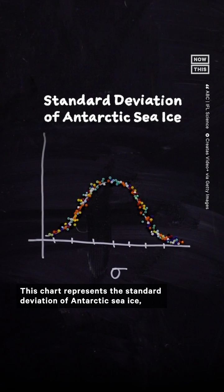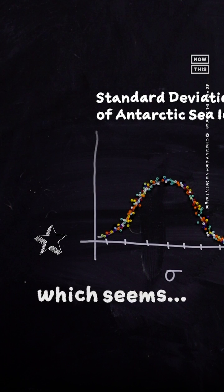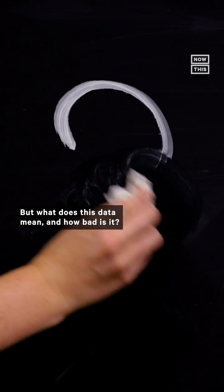This chart represents the standard deviation of Antarctic sea ice, and currently we're way over here, which seems bad. But what does this data mean, and how bad is it?